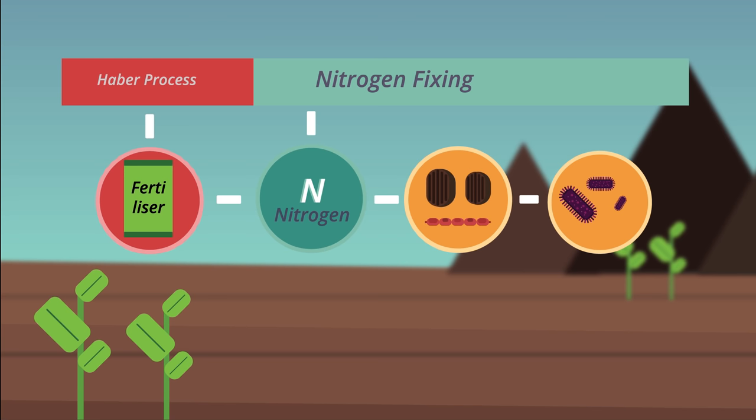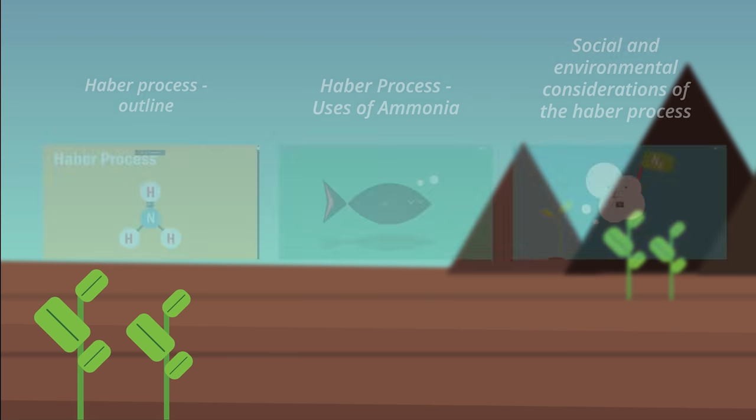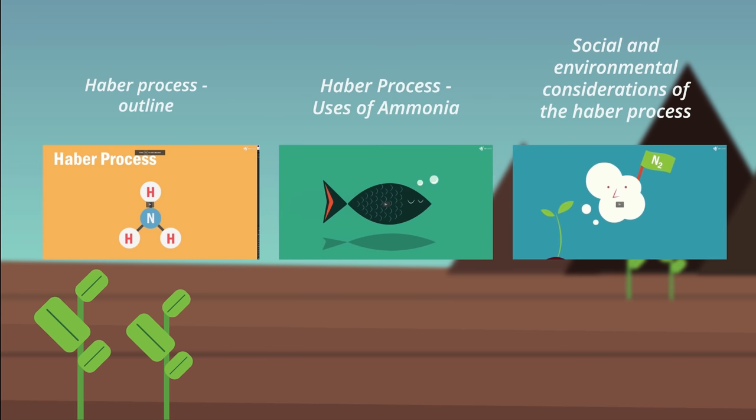Cell production is how growth occurs. Fertilisers are therefore used to increase the nitrates in the soil to maximise plant growth. Watch our videos on the Haber process to learn more about this.